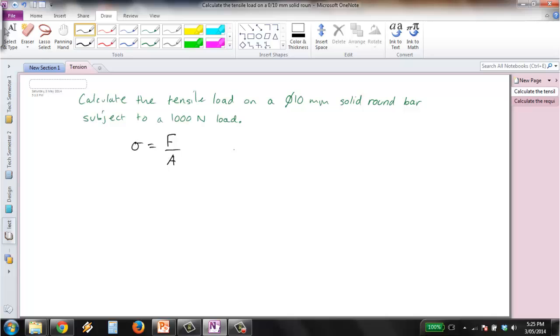And then for this F equals 1000, and A is equal to pi D squared on 4. So we just sub this in and we get 1000 on pi times 0.01 squared, since we've got 10mm diameter, on 4. And this gives us 12.73 MPa.